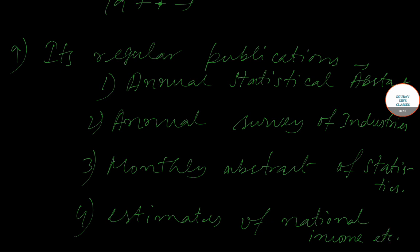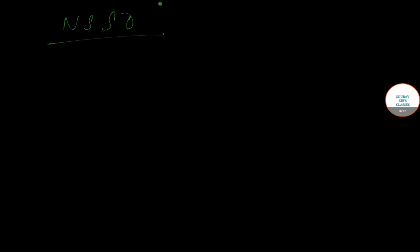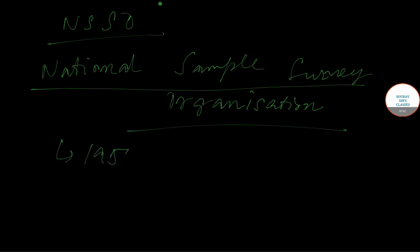Now I am going to talk about NSSO. The full name of NSSO is National Sample Survey Organization. It was established in 1950 and is also under the Ministry of Statistics and Program Implementation, that is MOSPI. We are going to talk about some functions and divisions of NSSO.